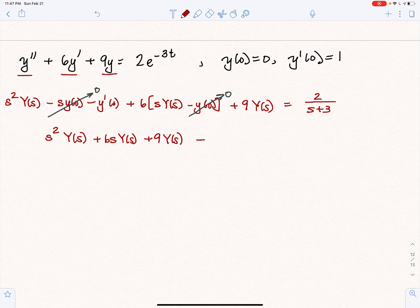I didn't leave Y prime of 0 out. Y prime of 0 is 1, so I'm going to write that there. 2 over S plus 3 equals 2 over S plus 3.